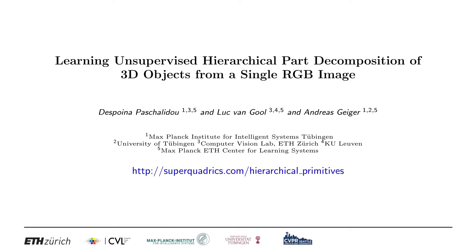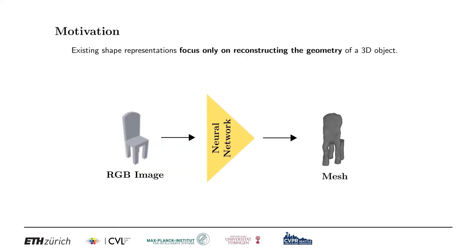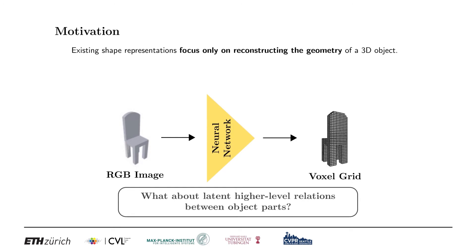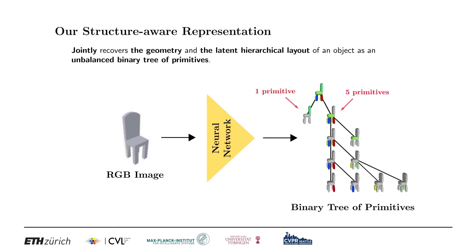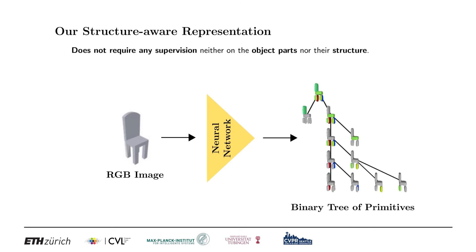Hello, I'm Despoina and I'm happy to present our work on unsupervised learning of hierarchical part decomposition of 3D objects. Existing shape representations focus on recovering the local 3D geometry of an object without considering its part-based decomposition or relations between parts. In this work, we propose a novel method that allows to jointly recover the geometry and the latent hierarchical structure of an object as an unbalanced binary tree of primitives, where simple parts are represented with fewer primitives and more complex parts with more. Our model is learned in an unsupervised fashion without any part-level supervision.